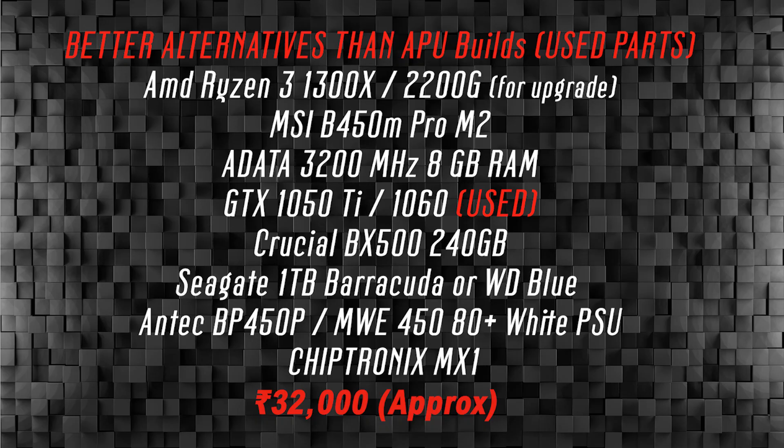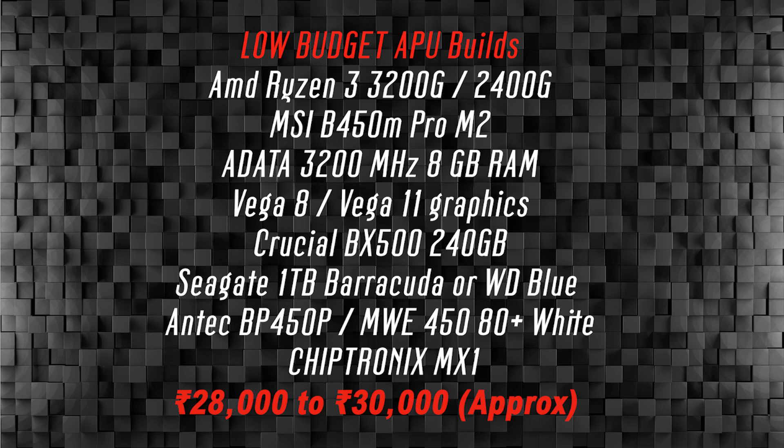With Ryzen APUs, at around 3400 Rs. you can save on the GPU. The APU itself costs about 8,000 Rs. For about 5,000 to 6,000 Rs. extra, you can get a proper graphics card like the RX 570, which is very good. The GTX 1650 and 1650 Super are also great options. An APU with a dedicated graphics card will give better performance.